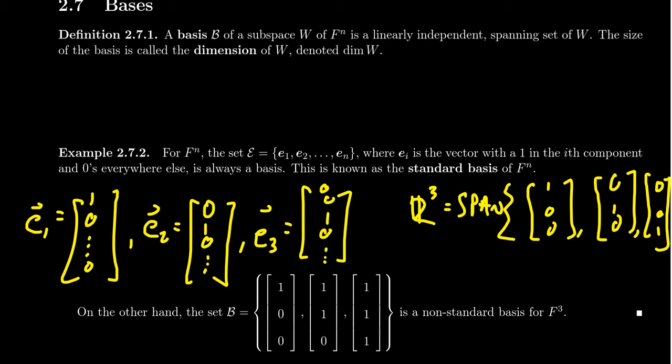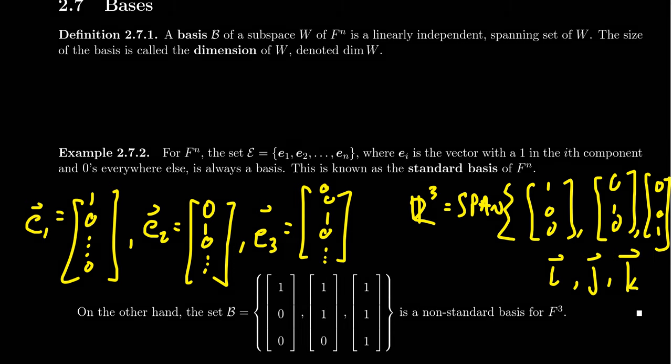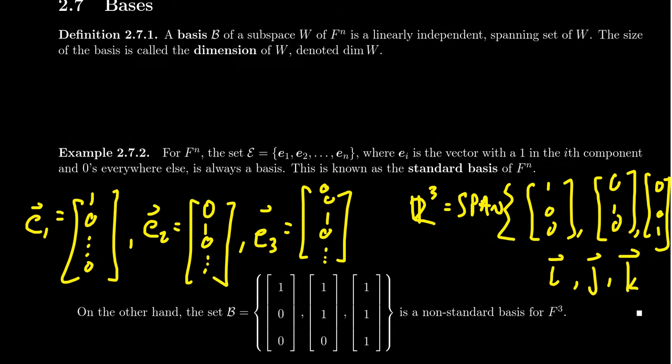If you were in like a multivariable calculus course, or maybe like a physics course or whatever, these vectors are often called the unit directional vectors i, j, and k, right? We haven't really been using those names in this course whatsoever, and that's because we transcend three dimensions, and therefore our alphabet might be insufficient for 100-dimensional space.